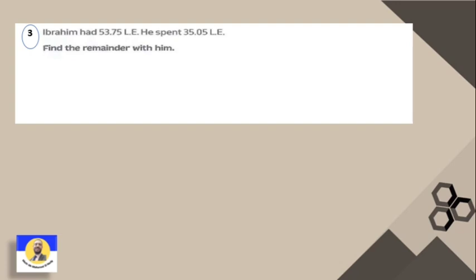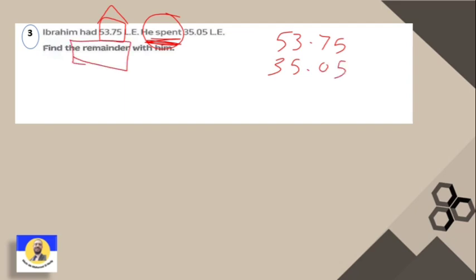Next: Ibrahim had 53.75 LE. He spent 35.5 LE. Find the remainder — how much is left with him. We do subtraction. Five minus five equals zero, seven minus zero equals seven. Three minus five — can't do it, so we borrow: one becomes zero, five becomes four, three becomes thirteen. Thirteen minus five equals eight, four minus three equals one. The remainder with Ibrahim is 18.25 LE.